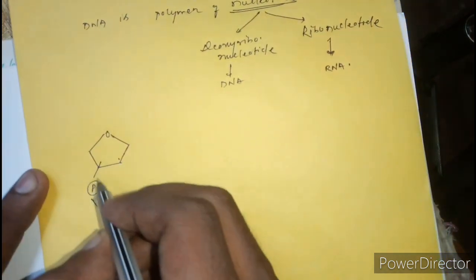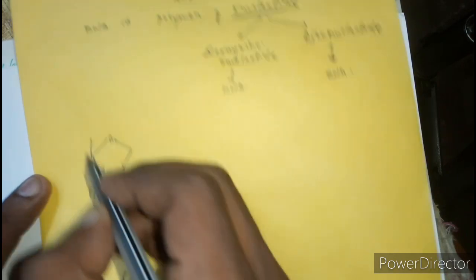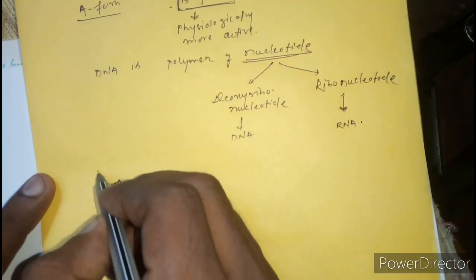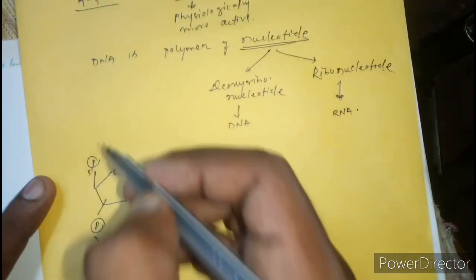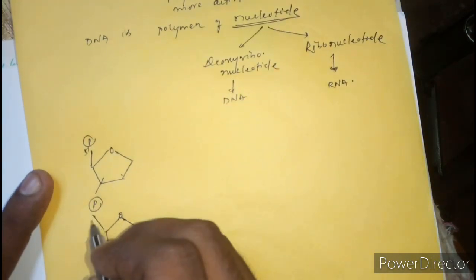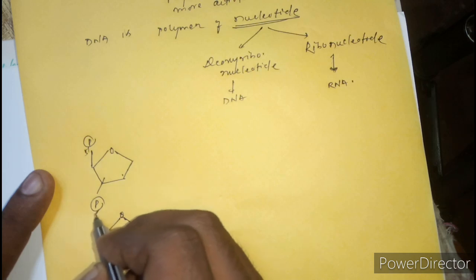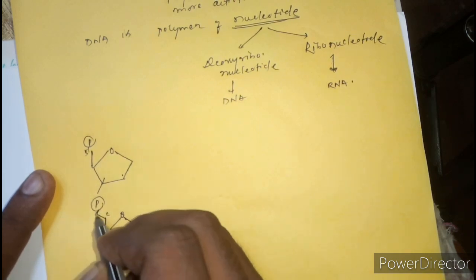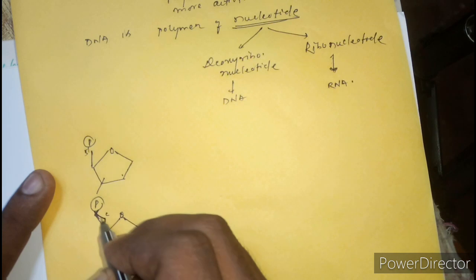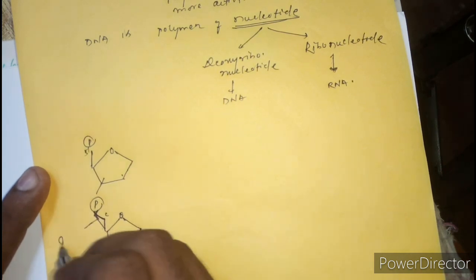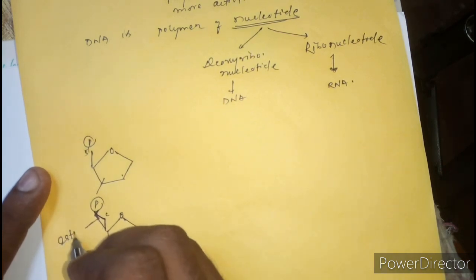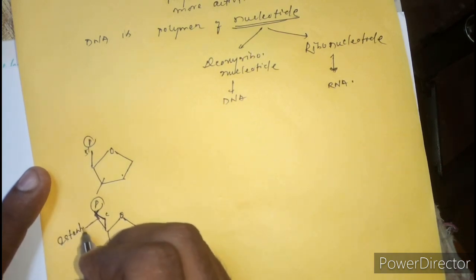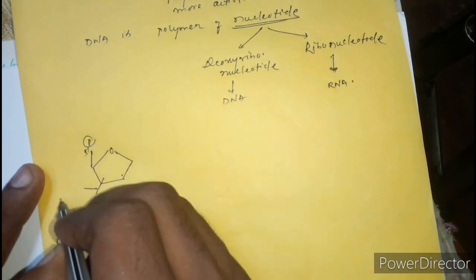Here will be the deoxyribonucleotide. Here will be the phosphate group, then an alternate phosphate group. Here will be the carbon and here will be the ester linkage — this is the ester bond.